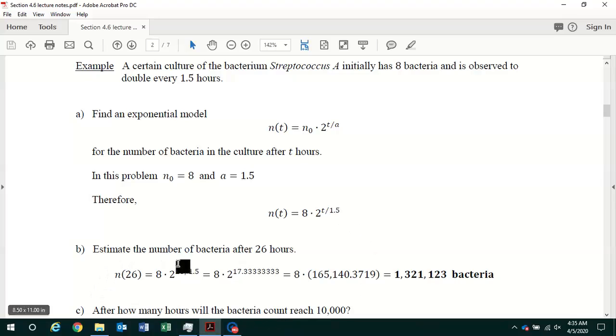In part B, you're asked to estimate the number of bacteria after 26 hours. To do that, you just plug in 26 for t, and we have n of 26 equals 8 times 2 to the 26 over 1.5 power. You've got to simplify the exponent, 26 divided by 1.5 is 17.333333. You've got to do exponentiation before multiplication, and when you multiply by 8 and round to the nearest integer, you get 1,321,123 bacteria after 26 hours.